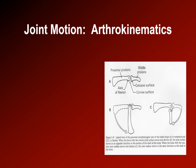Now let's consider the convex-concave rule, which describes the motion of bones relative to the joint centers. In a finger joint, the axis of rotation is within the condyles of the distal part of the phalanx. When a convex surface moves — like the middle phalanx going downward — the joint surface moves in the opposite direction to the shaft of the bone, rotating around the joint surface.